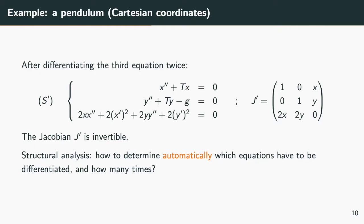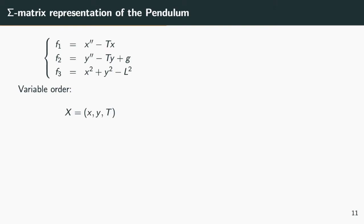They are structural in that they only make use of the structural information about the system, that is, which variables or derivatives of the variables appear in which equations. In our example, we first order both the equations and the variables. The choice of an order is arbitrary and does not impact the results of structural analysis.